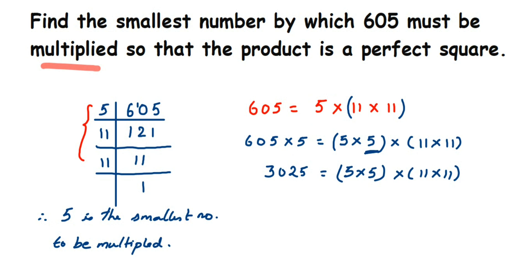In case they also ask you to find the square root: the answer for this question is 5, the smallest number to be multiplied to get a perfect square. If they ask for the square root of 3025, you take one number from each pair — one 5 and one 11 — so 5 × 11 = 55. The square root of 3025 is 55.